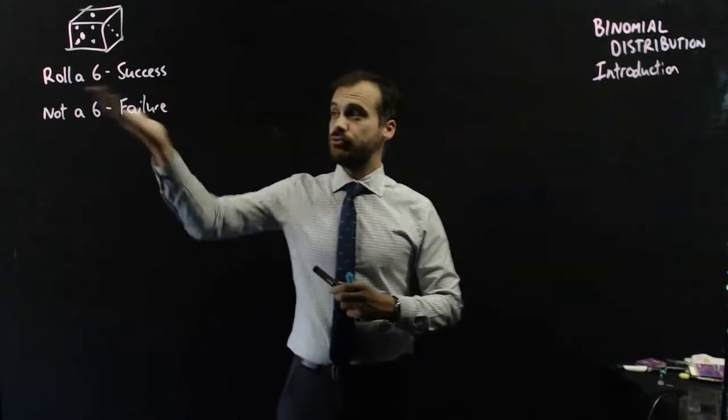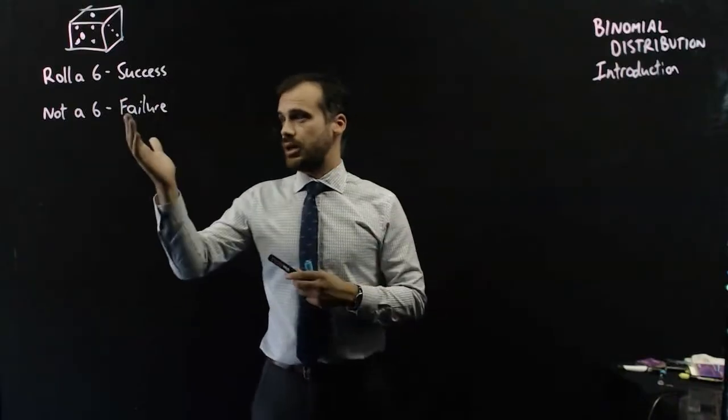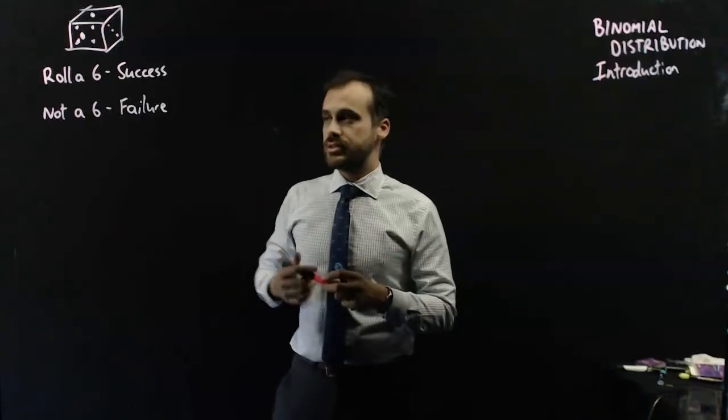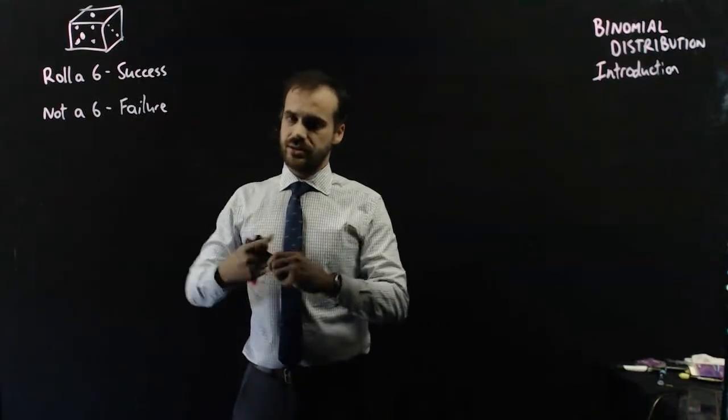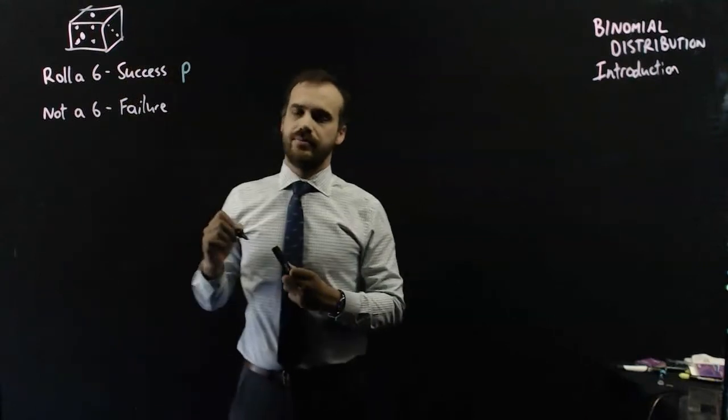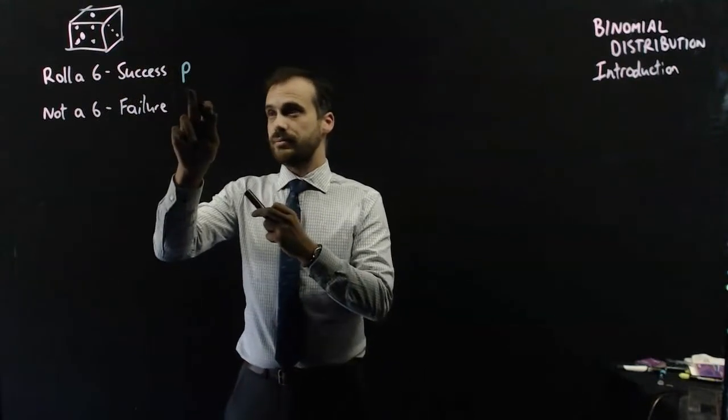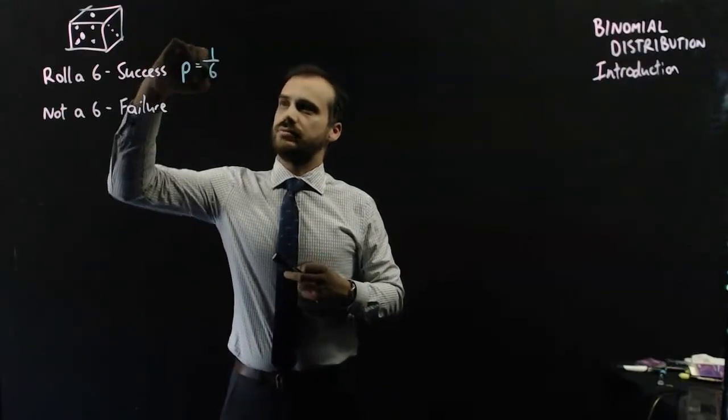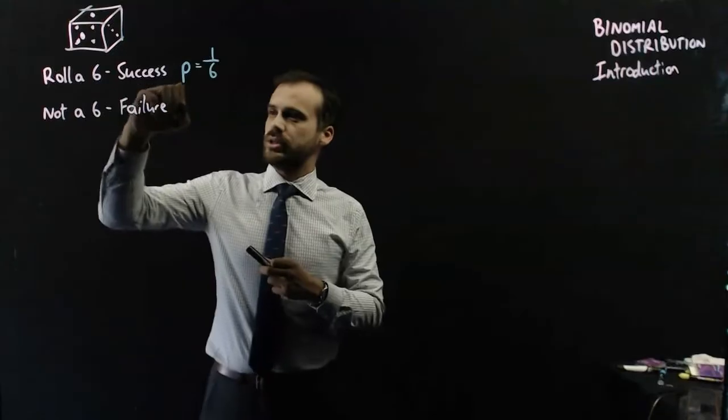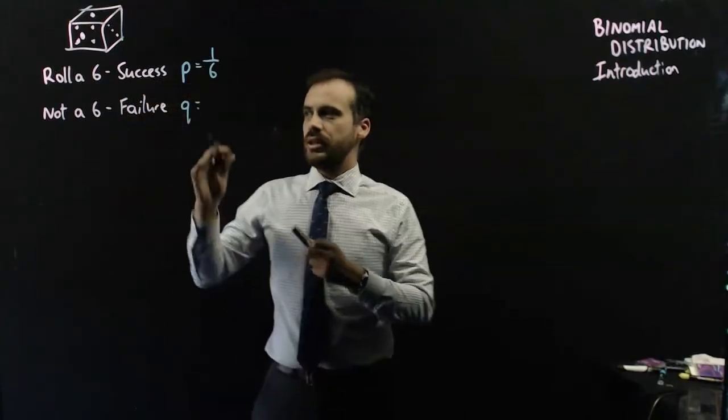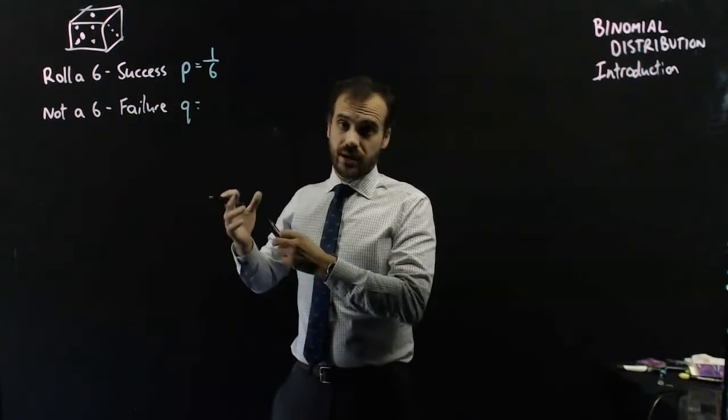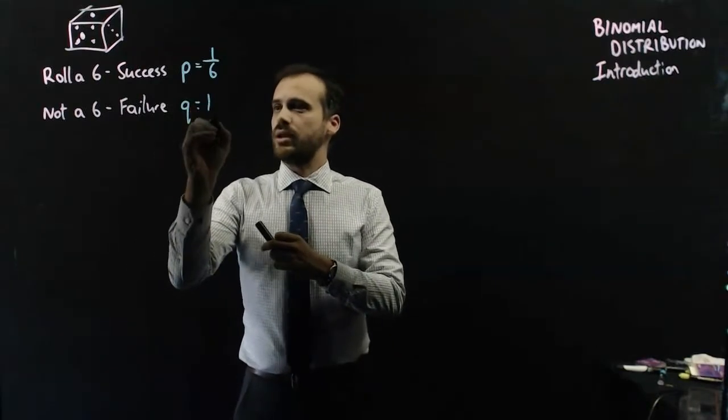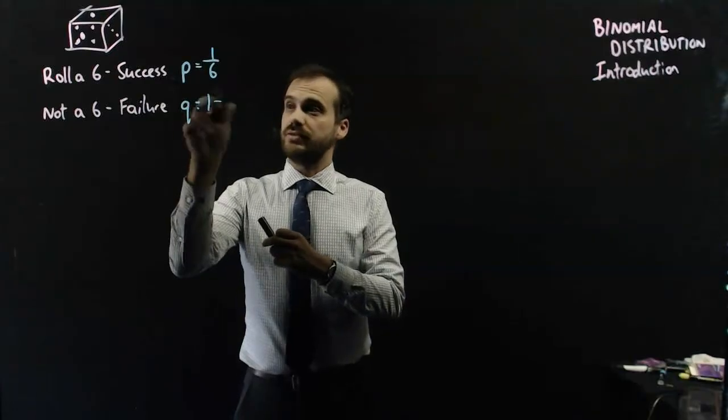We have a dice. If you roll a 6, success. Not a 6, a failure. We're going to roll that dice multiple times. In maths, for success, we're always going to denote that with the letter P. P is the probability of success. The probability of rolling a 6 is 1 in 6. And failure, we're going to use the letter Q to denote that.